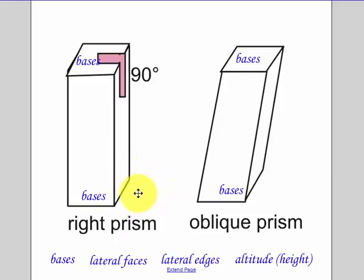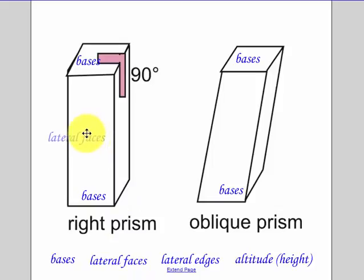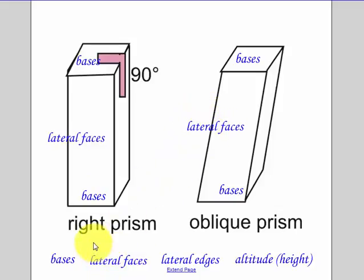A prism could have six sides, ten sides, four sides, or two sides. But your bases — you only have two congruent bases. The lateral faces are all of the other sides. In a right prism your lateral faces are going to be rectangles, and in an oblique prism your lateral faces are going to be parallelograms.